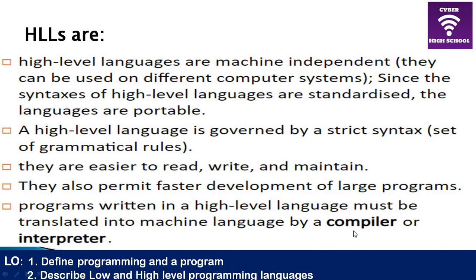Conversion into machine language is done using two translator programs. One is called the compiler and the other is called an interpreter. The compiler translates the whole program at once, converting it from source code to object code — a new program now in low-level machine language. The interpreter translates one instruction at a time, and programmers use it more when creating programs because it makes it easy to correct mistakes.